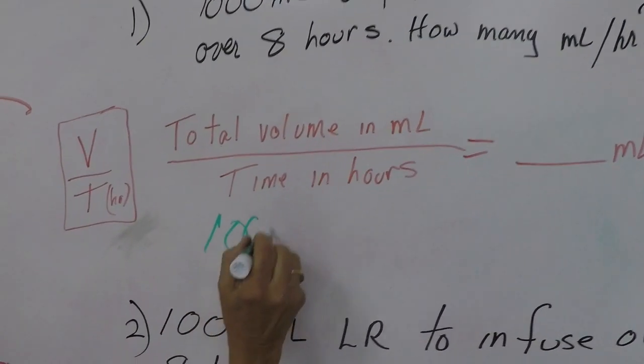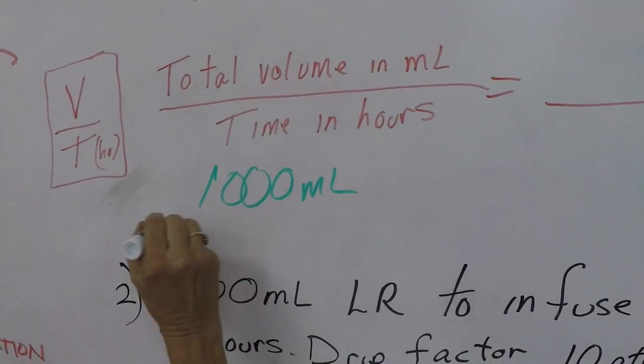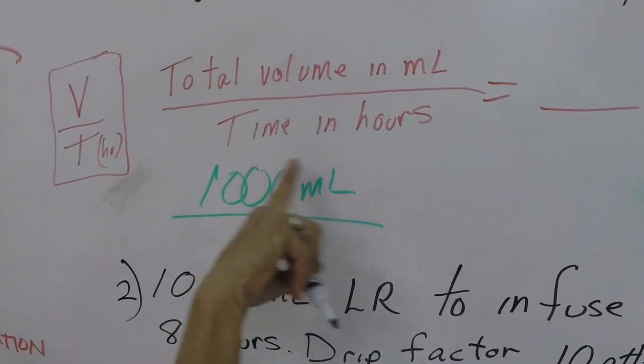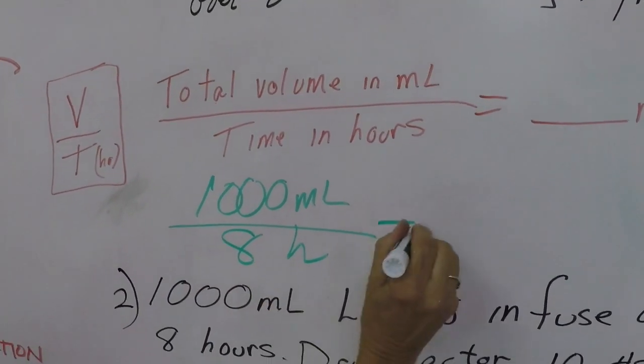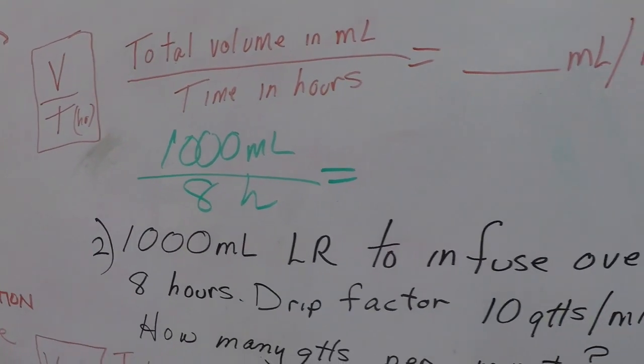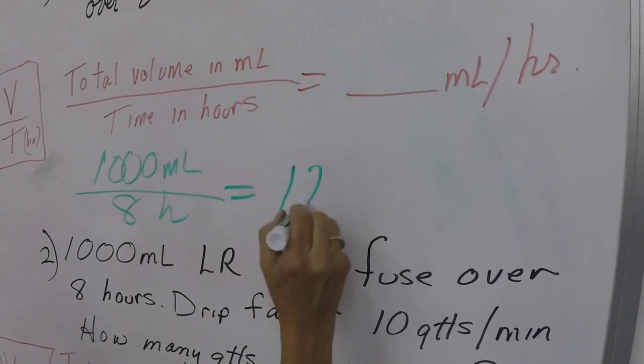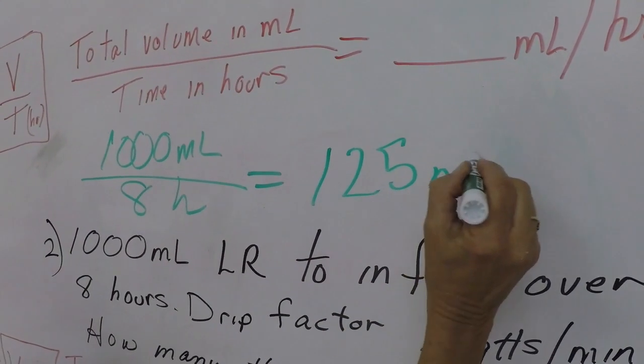Our total volume is 1,000 ml's. Our time in hours is eight hours. So if I divide a thousand by eight, it's going to be 125 ml per hour.